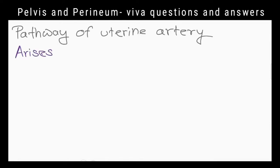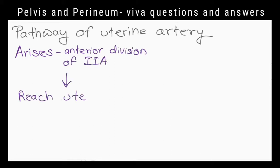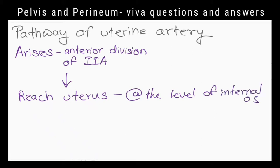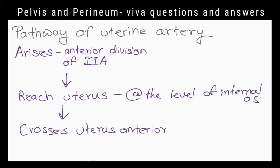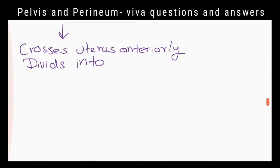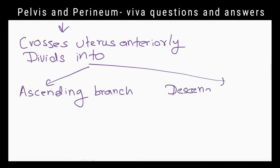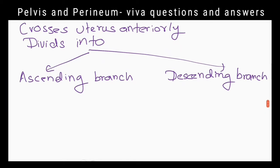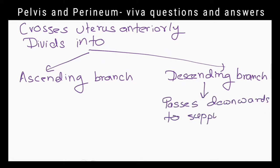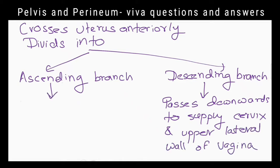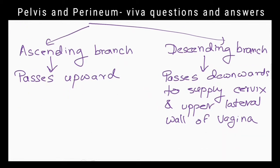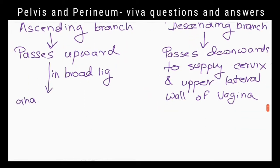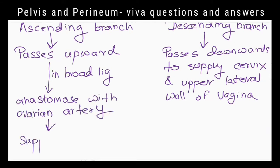What is the pathway of the uterine artery? It arises from the anterior division of the internal iliac artery. It reaches the uterus at the level of the internal os, crosses the ureter anteriorly, and divides into ascending and descending limbs. The descending limb passes downward to supply the cervix and upper lateral wall of the vagina. The ascending limb passes upward alongside the uterus in the broad ligament and anastomoses with the ovarian artery. Both arteries supply the uterus.